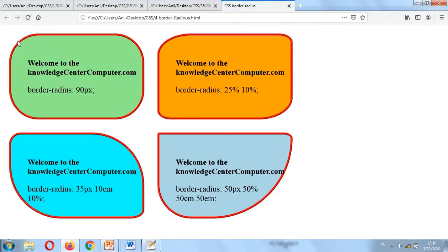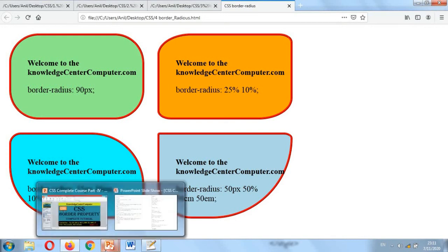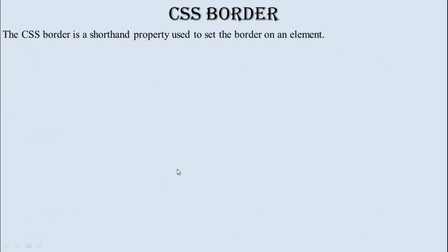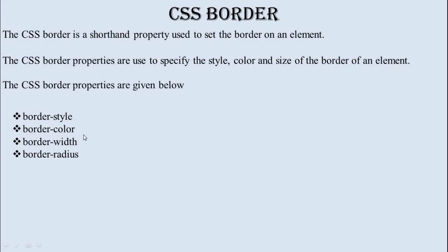On the div, I have mentioned border-radius: 90px 25px 10% 35px for the first section, then 10em 10% for the second, 50px 50% 50em for the third, and 50px 50% 50em 50px for the fourth. When all four are executed, you can see the output: the first has one corner style, the second uses both radius values in two sections, and so on — in this way all four corners are handled.